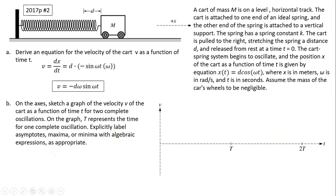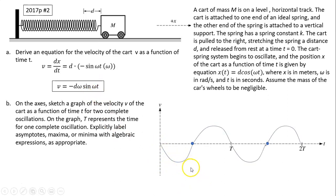Part B: Sketch a graph of velocity v as a function of time for two complete oscillations. One cycle, two cycles — at half cycle the value is zero, so those are all zero crossing points. This is a negative sine function, which starts at zero and goes down. The maximum value is dω and the minimum value is negative dω — those are your amplitudes.